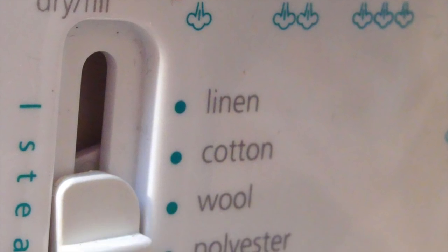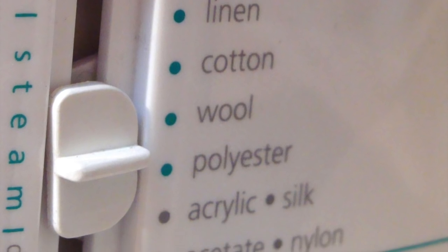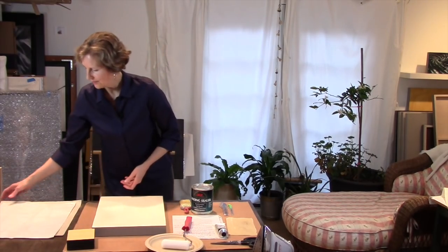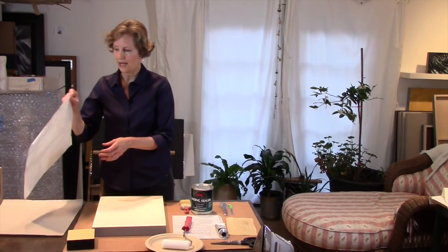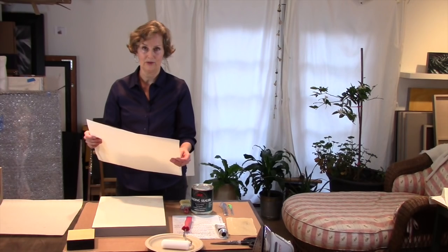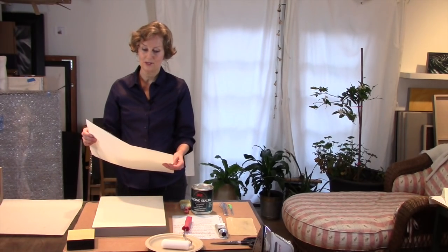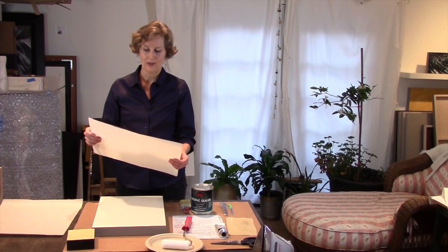After everything's dry, I'm ready to set my iron to a polyester setting and begin applying my first layer of Beva film. Beva film comes on a roll and I buy it in 54 inch widths from Museum Services in St. Paul, Minnesota. There are other sources in California and on the East Coast. I found Museum Services responds most quickly and the prices are the same no matter where you shop.